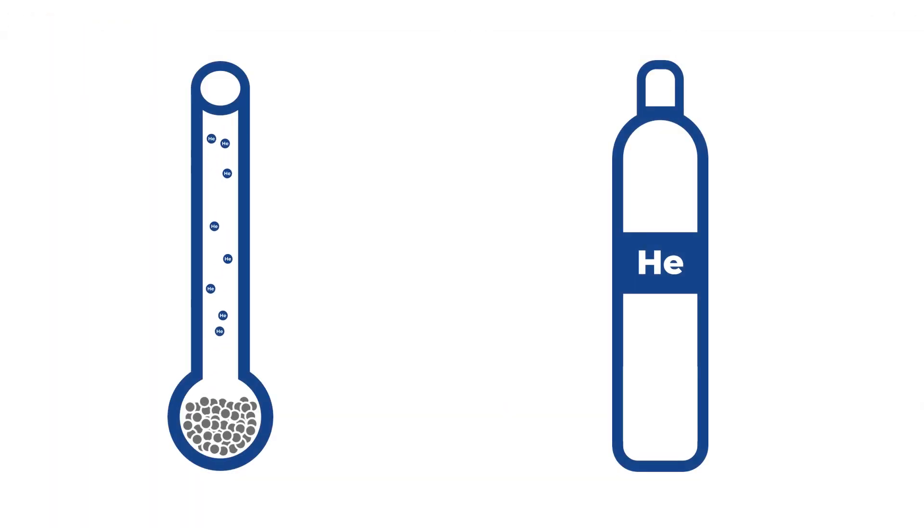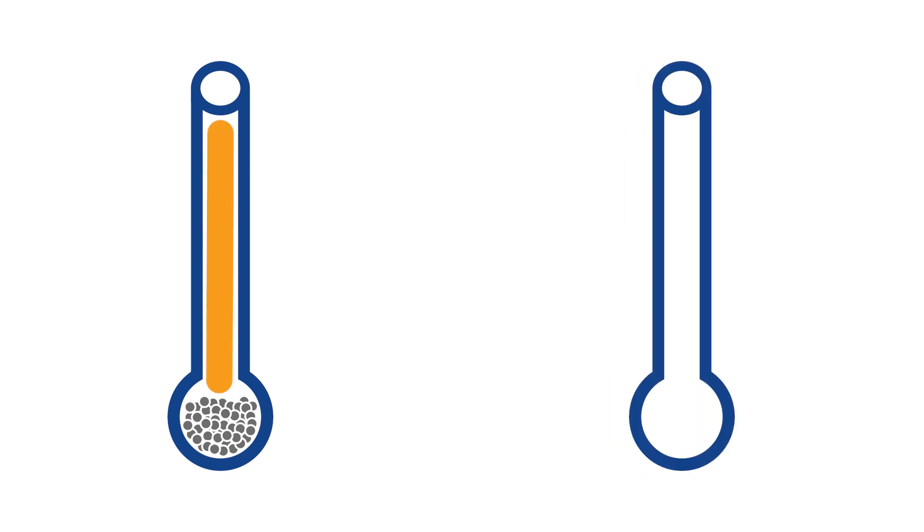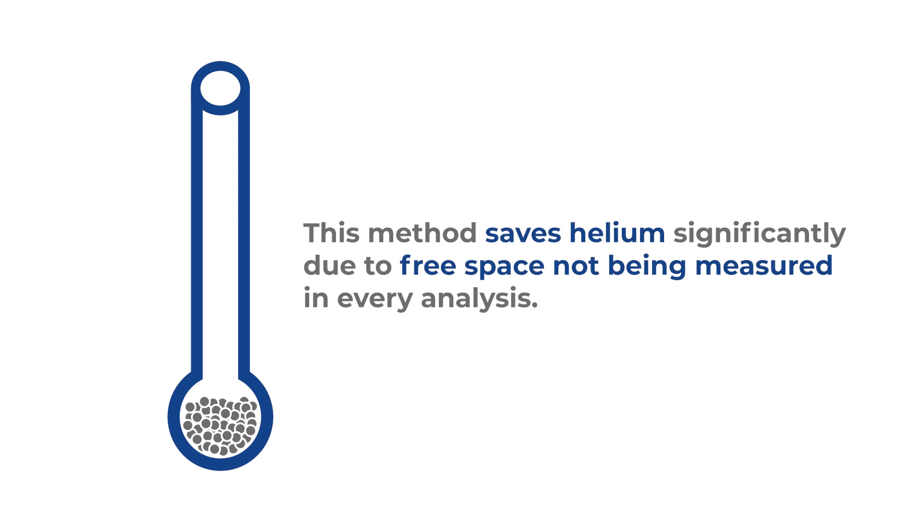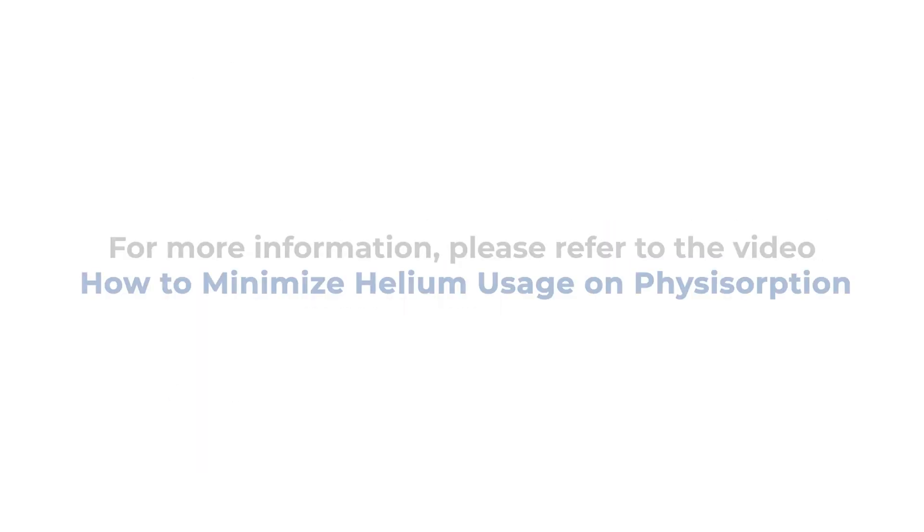Another way to avoid helium exposure on a sample is calculating free space with a calibrated blank tube and density of the sample. It also helps to save helium significantly since the free space is not being measured in every analysis. For step-by-step instructions on this method, please refer to how to minimize helium usage on desorption instruments video.